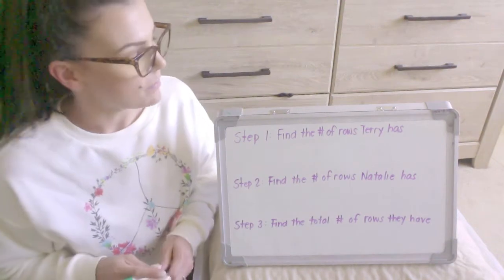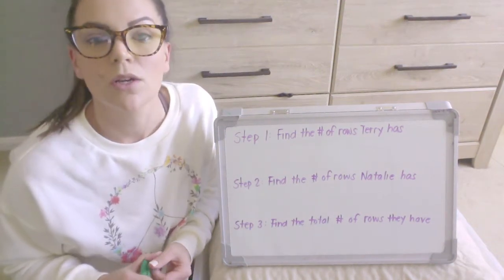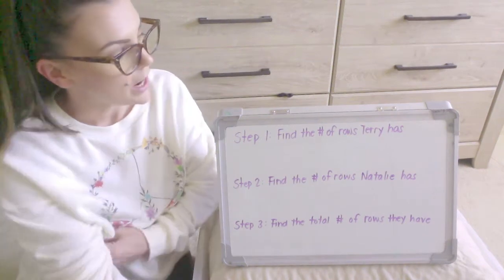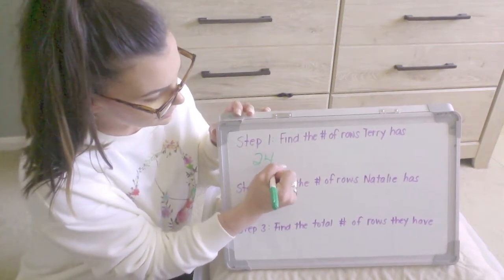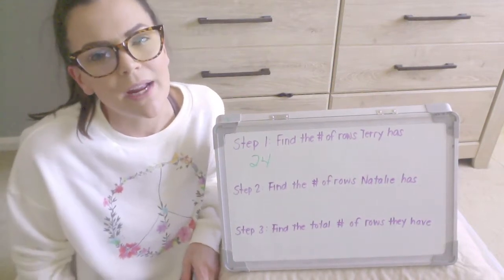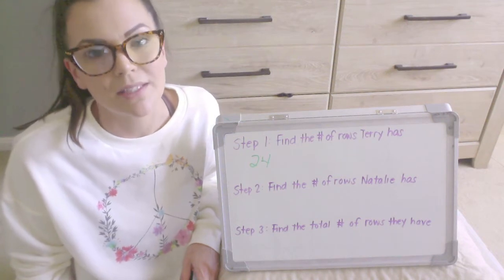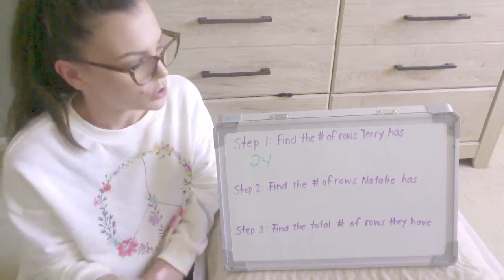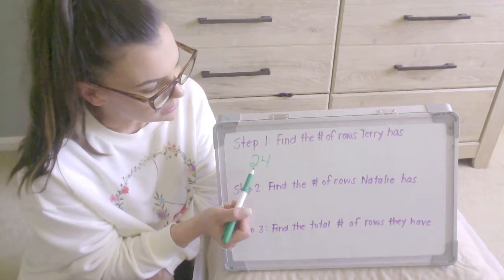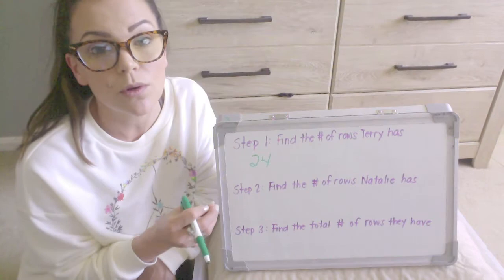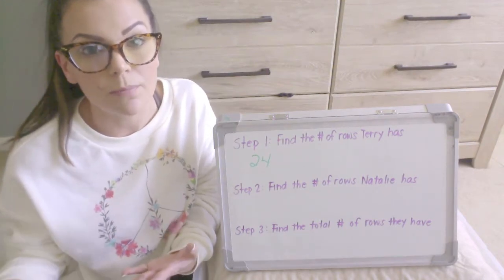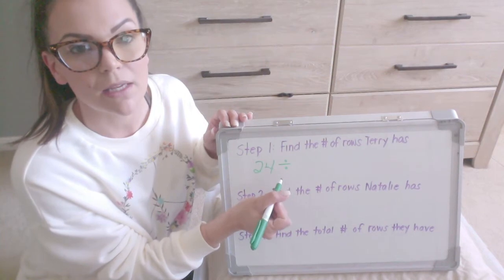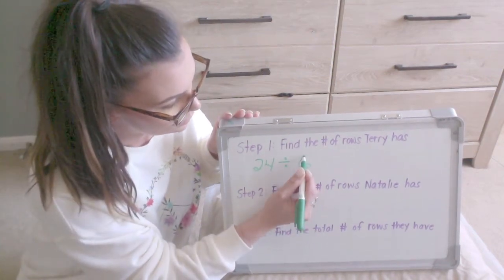We're going to get started by thinking about the number of model cars Terry has. If you look in the problem, you'll see that Terry has 24 model cars, so we're starting out with a total of 24. Next, it says he arranges them into equal rows of six. I need to think about what operation I'm going to use. He's taking his cars and dividing them up or splitting them into equal groups, so I know that means I'm dividing.